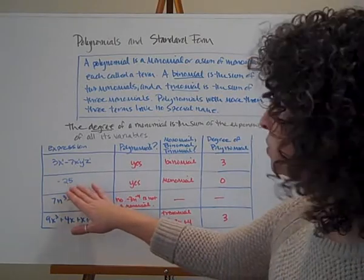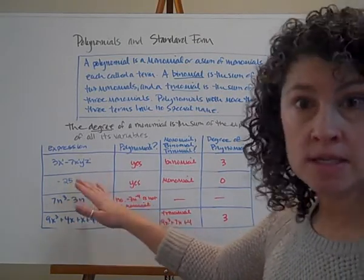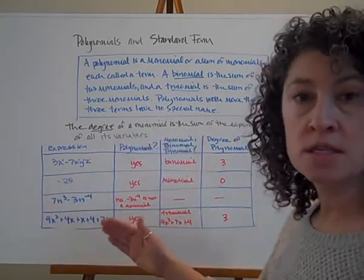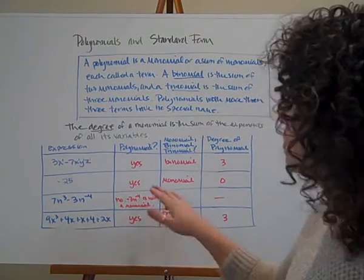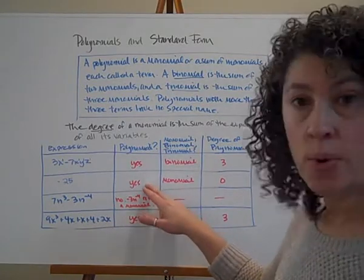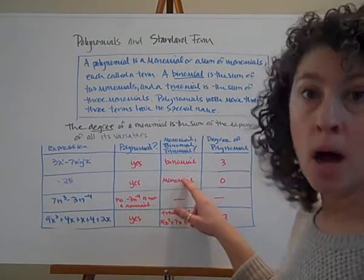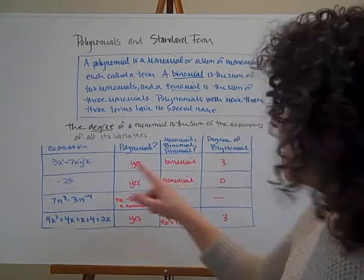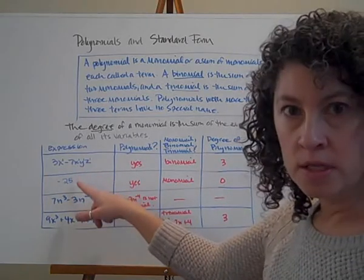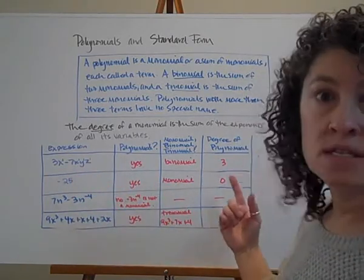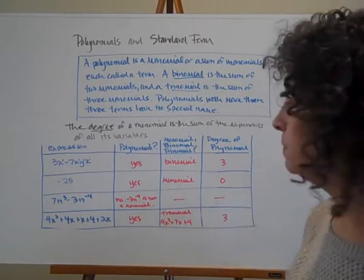Next expression: negative 25. Is it a monomial? Yes, it is. Since it's a monomial, it falls under the category of polynomials, so yes, it's a polynomial — specifically a monomial. Since it doesn't have any variables, its degree is zero.